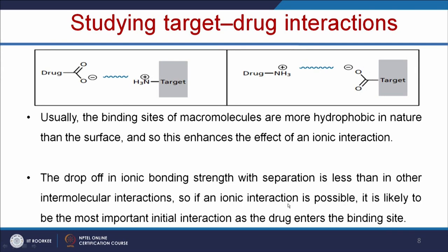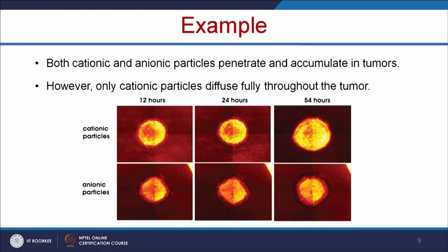If an ionic interaction is possible, it is likely to be the most important initial interaction as the drug enters the binding site. For example, both cationic and anionic nanoparticles can penetrate and accumulate in tumors, but cationic particles diffuse fully throughout the tumor, whereas anionic particles do not diffuse as well when compared to cationic particles.